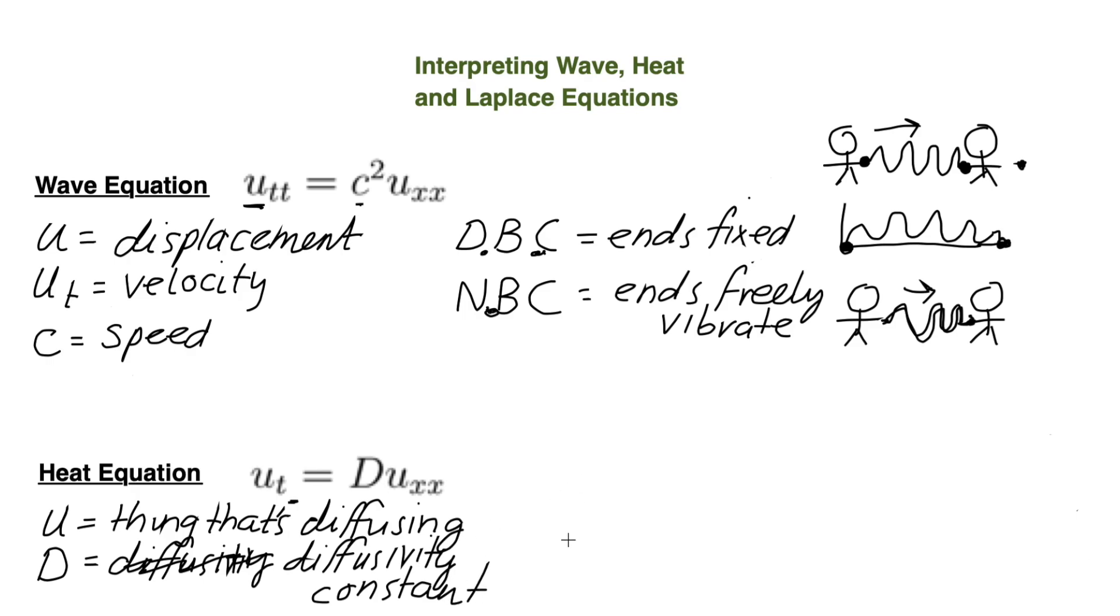So for the Dirichlet boundary condition, this is just specifying the temperature on the boundary. Now, if this is a homogeneous Dirichlet boundary condition, the temperature on the boundary will be fixed to zero degrees.